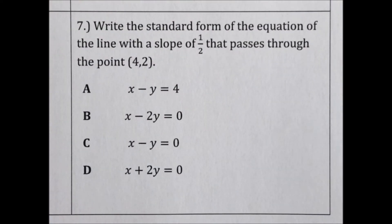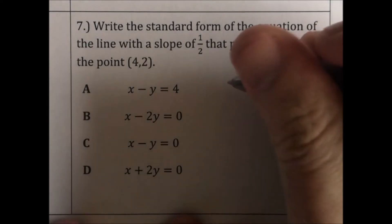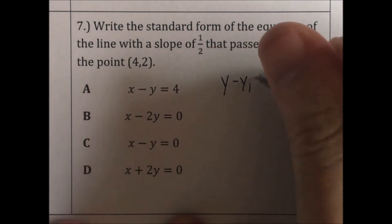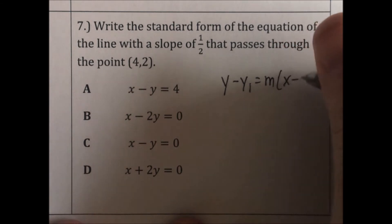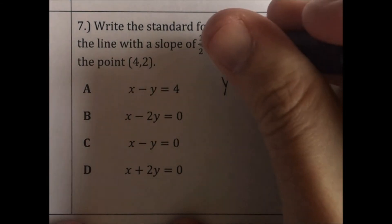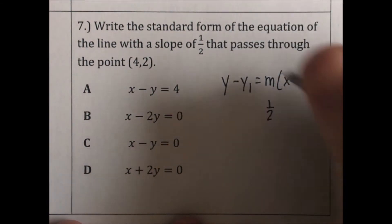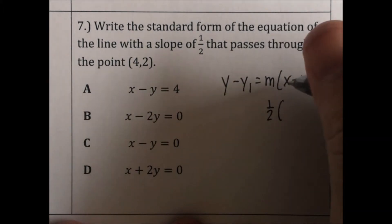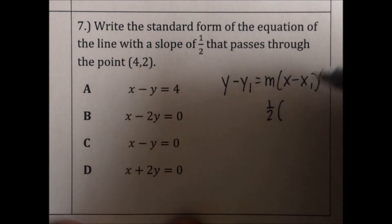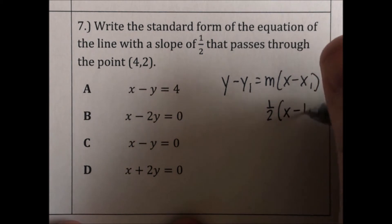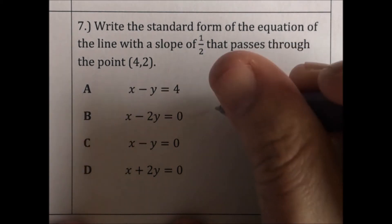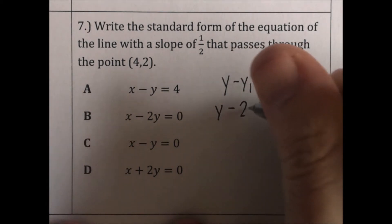Write the standard form of the equation of the line with a slope of 1 half that passes through the point 4, 2. Since they gave us the slope and a point, I'm going to write this in point-slope form first. The slope is 1 half, so I'll put that in for m. They gave us x and y coordinates, so I'll put 4 in for x1 and 2 in for y1.